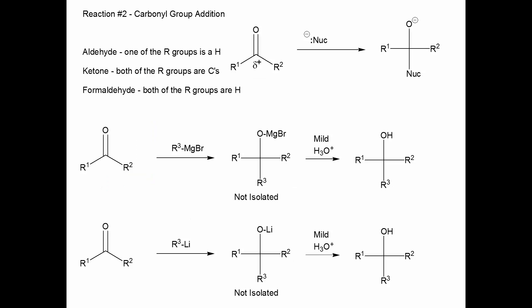This is the number one reaction, and it will be an essential part of future chapters — the carbonyl group addition reaction. Because there's a partial positive charge at the carbonyl carbon, we can add a nucleophile to that center and make an alkoxide. Get used to seeing these arrows — you're going to see them a lot. The nucleophile adds to the carbonyl carbon to turn the sp2 carbon into an sp3 carbon, and after protonation of this alkoxide, you get an alcohol.